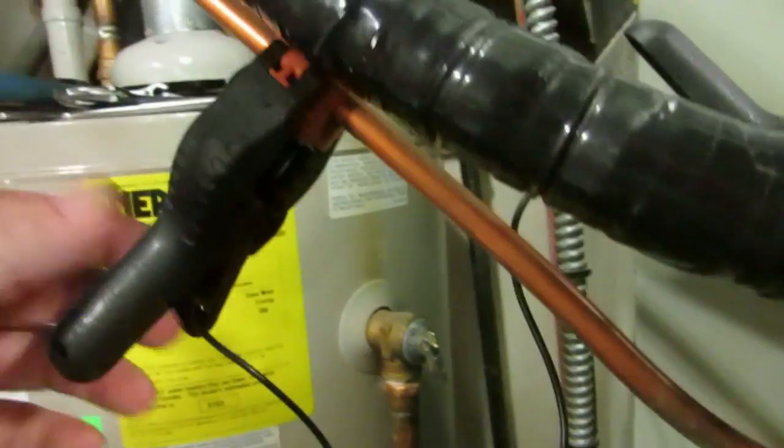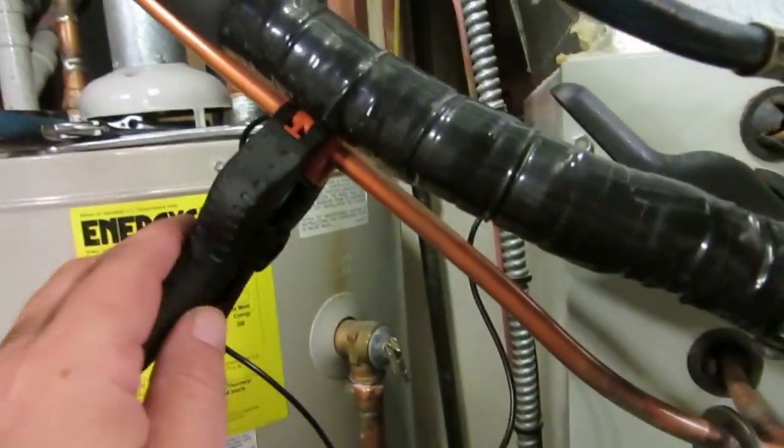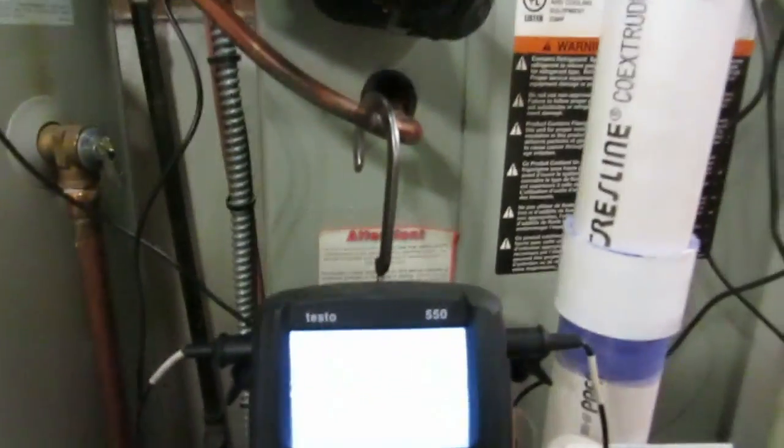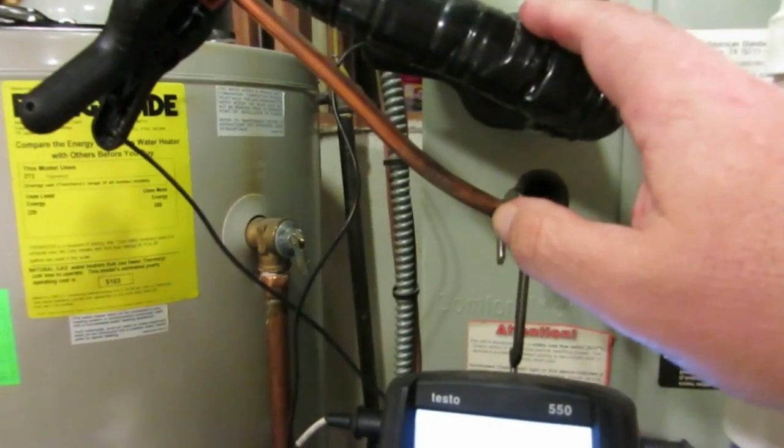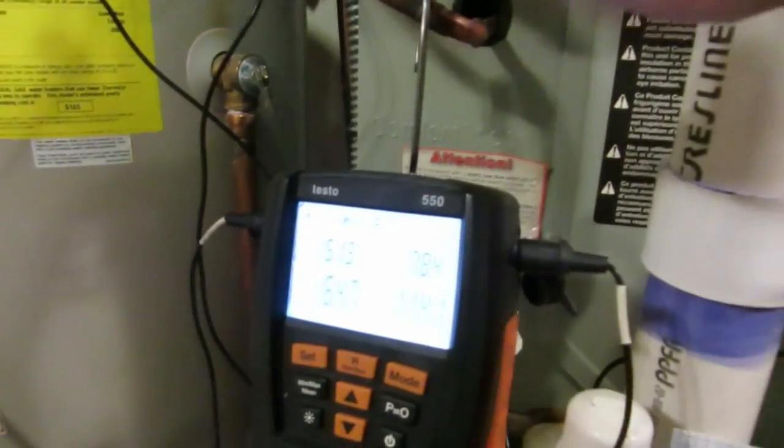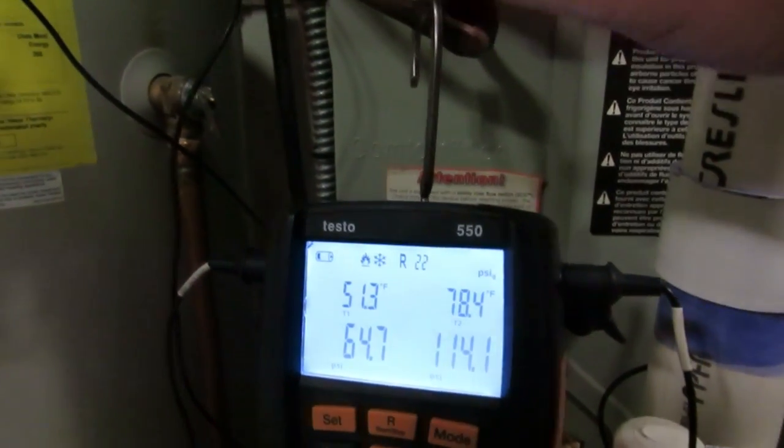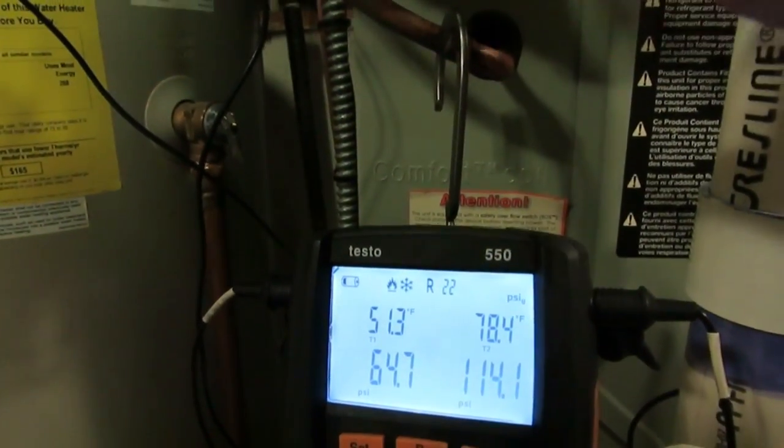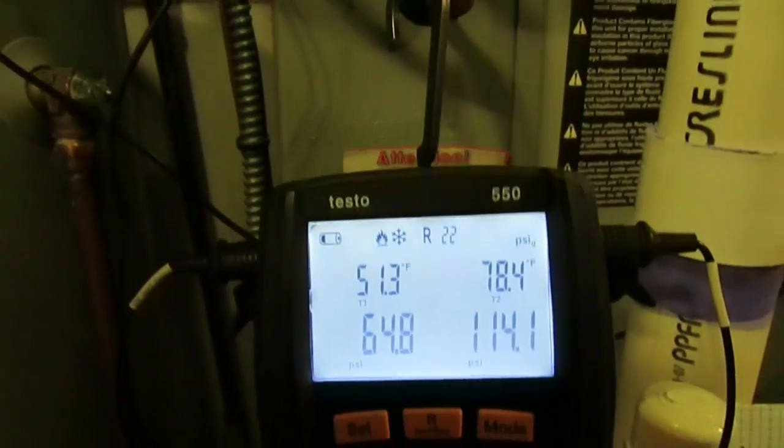Just for giggles, I went ahead and put the liquid side temperature probe on the Testo here. The only reason we did that is because I just wanted to show once again that the Delta T that we're reading on our Testo 550, 557, 570 is actually the temperature differential between T1 and T2, and we'll show you that here in just one second.